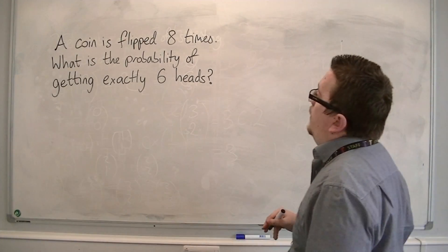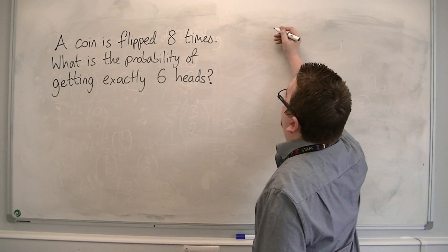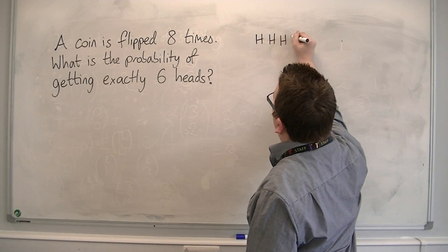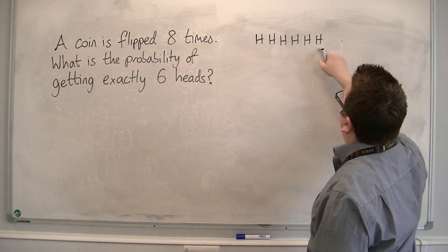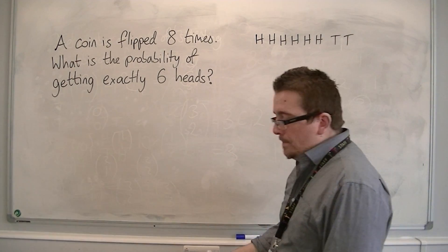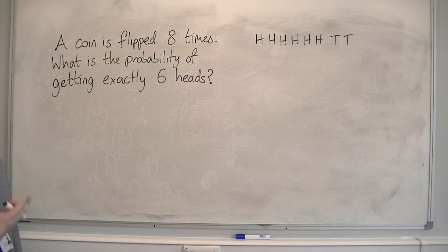So if I flip a coin 8 times, one of the possibilities of getting 6 heads is getting 6 heads in a row. So 1, 2, 3, 4, 5, 6, followed by 2 tails. So that's one of the possibilities, but there are other combinations.